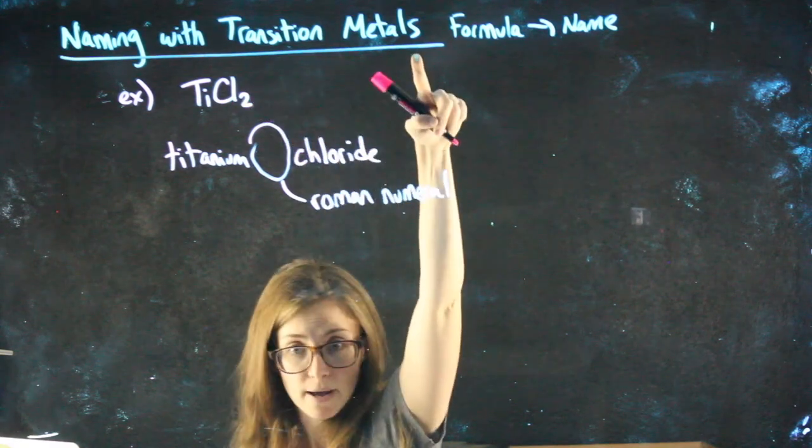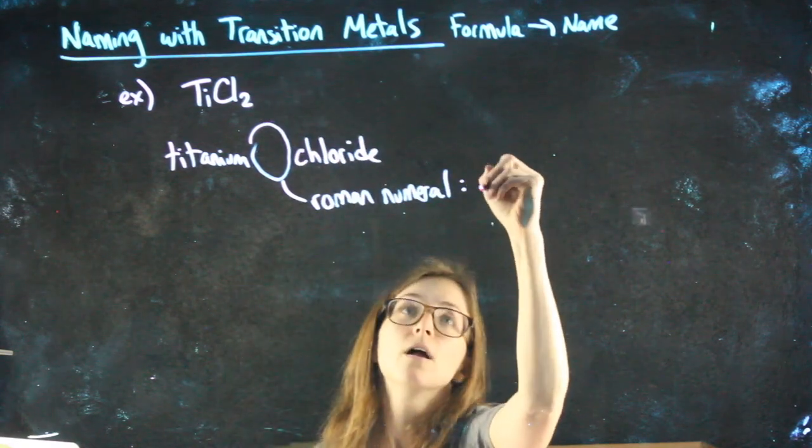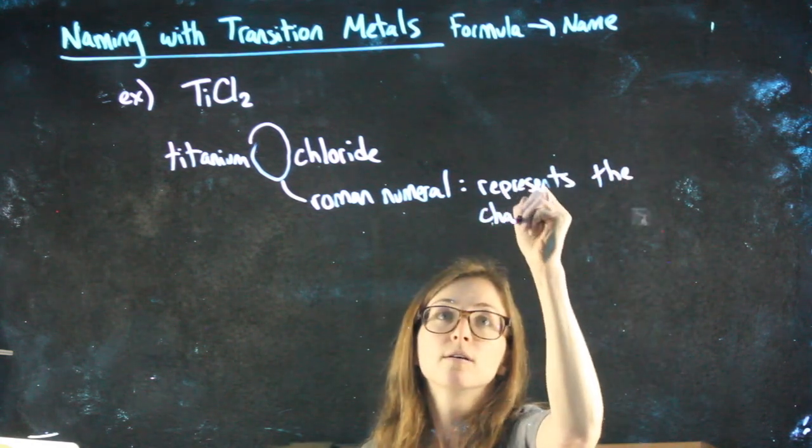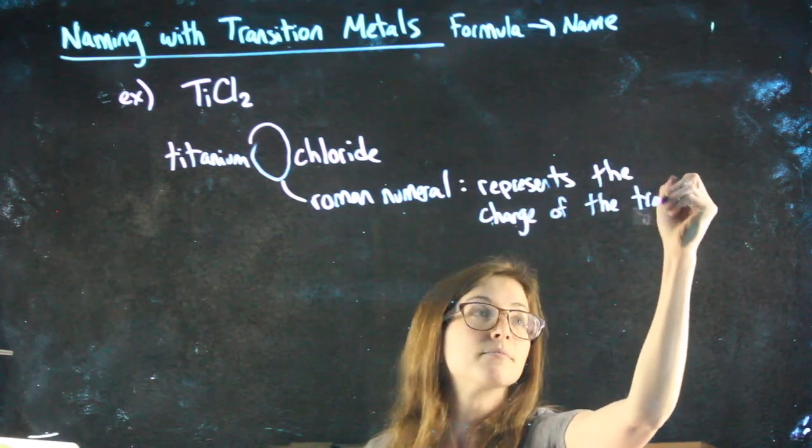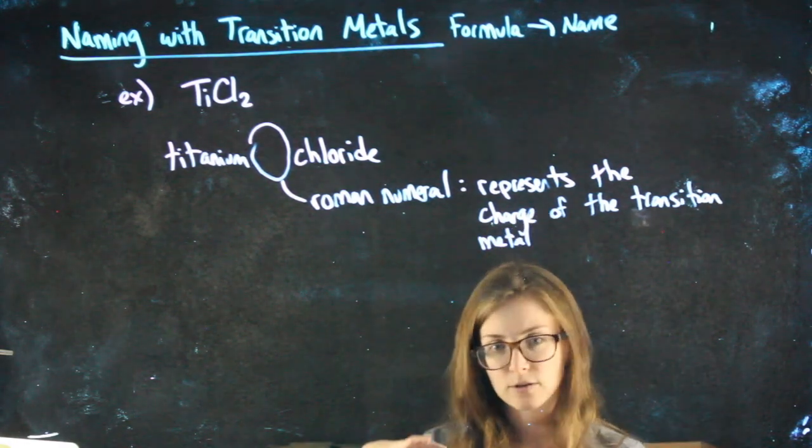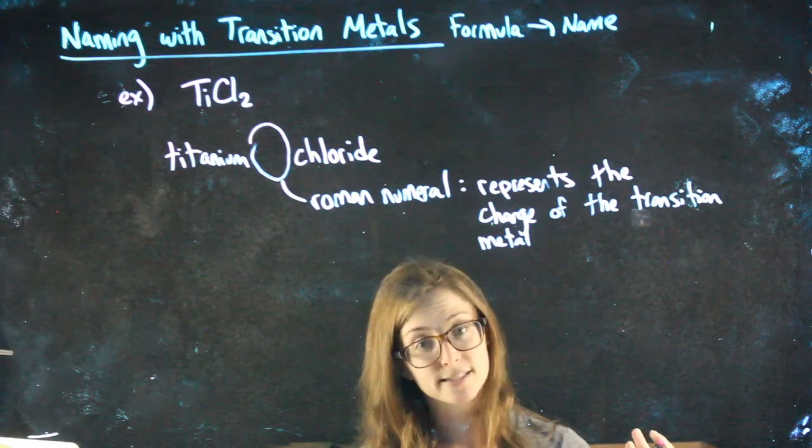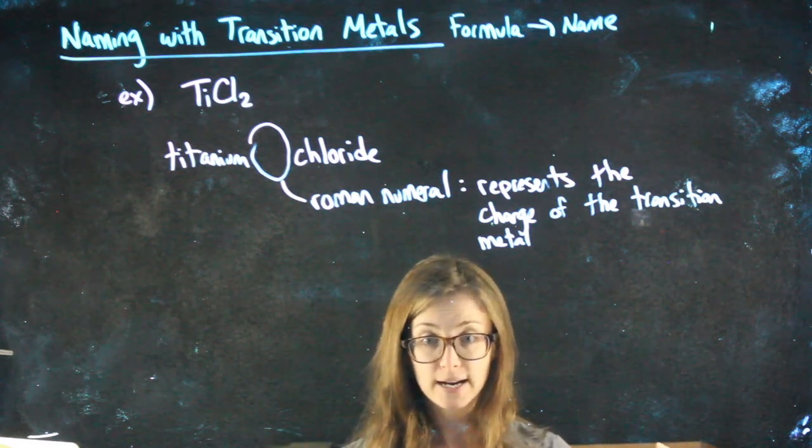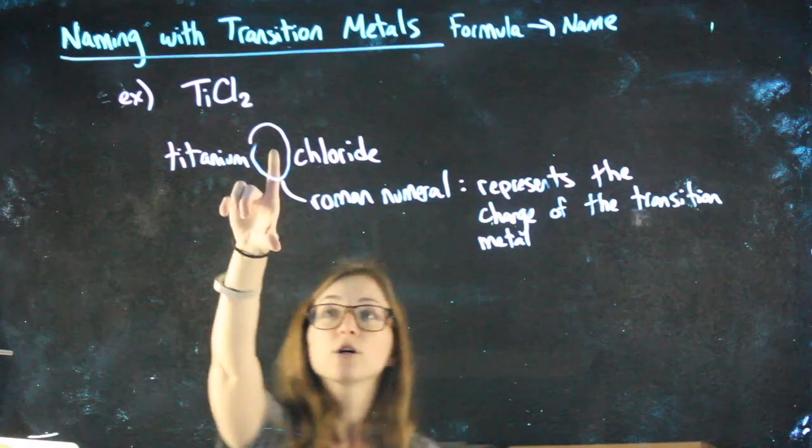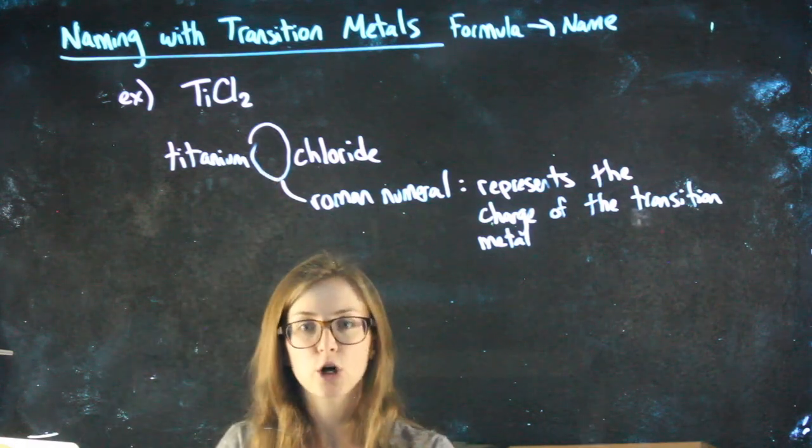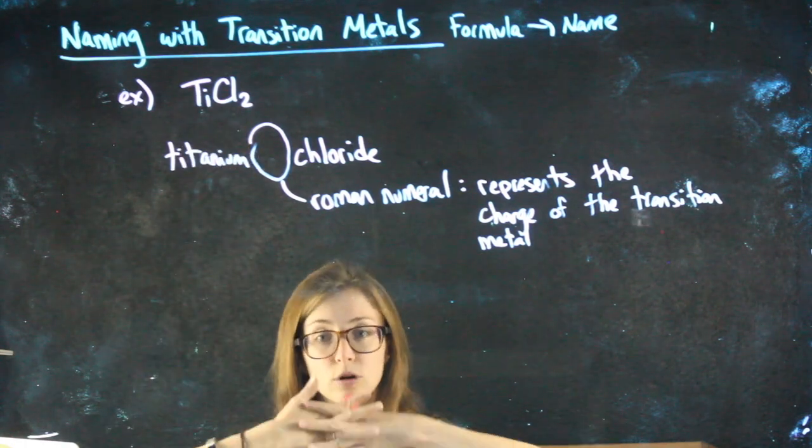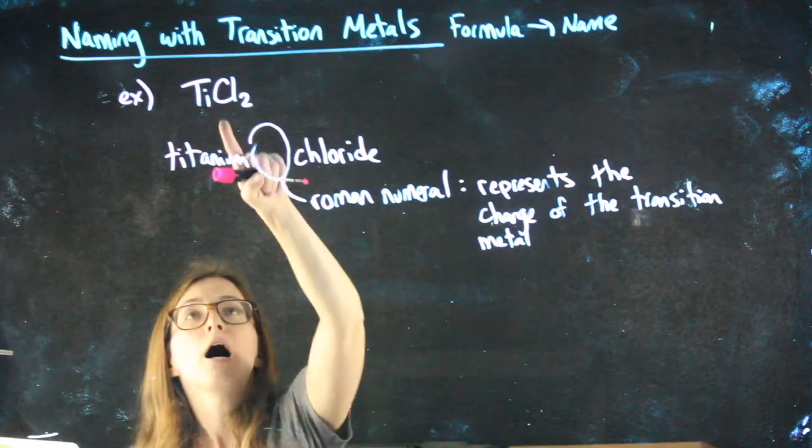Anytime we have a transition metal in its name, we're gonna have a Roman numeral that represents the charge of the transition metal. Metals, whether they're regular metals or transition metals, are always positively charged, so I don't need to worry about positive or negative, always positive. But we need to be explicit about what the charge is. So in order to put that Roman numeral there, we have to figure out its charge, and we can do that because we know that titanium and chlorine came together in a way that they made a neutral compound.